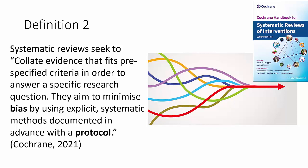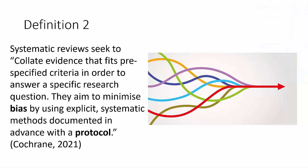According to Cochrane, systematic reviews seek to collate evidence that fits pre-specified criteria in order to answer a specific research question. They aim to minimize bias by using explicit systematic methods documented in advance with a protocol. Those two keywords highlighted here are bias and protocol. The protocol will be your roadmap, giving yourself and your marker, publisher, or reviewer a clear guide as to how you will carry out the systematic review.